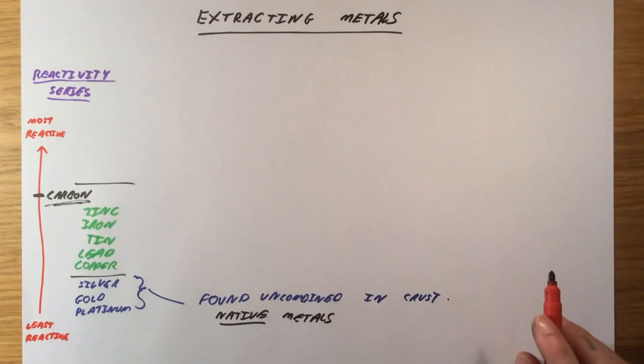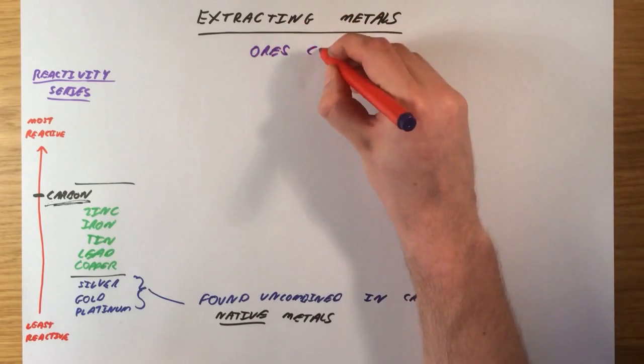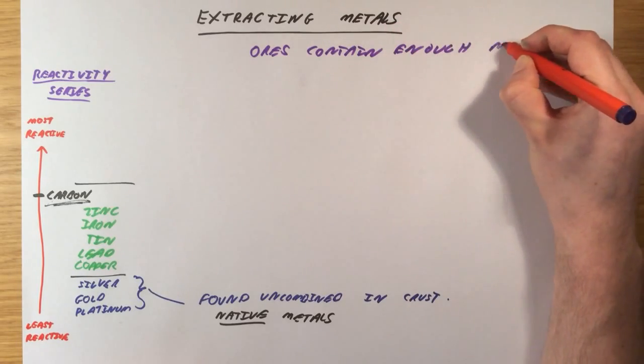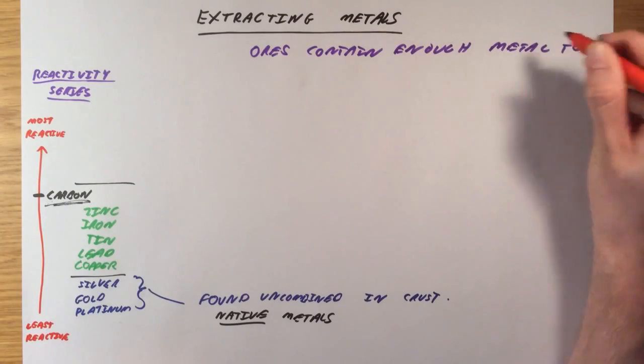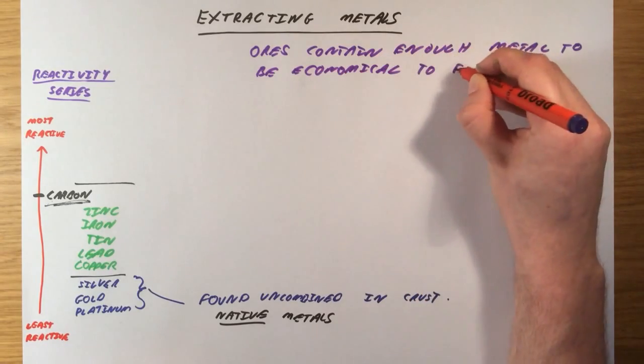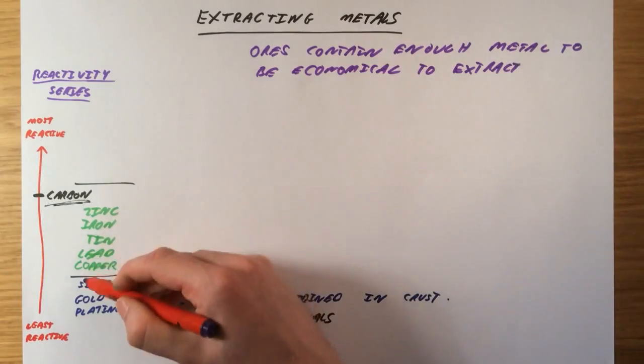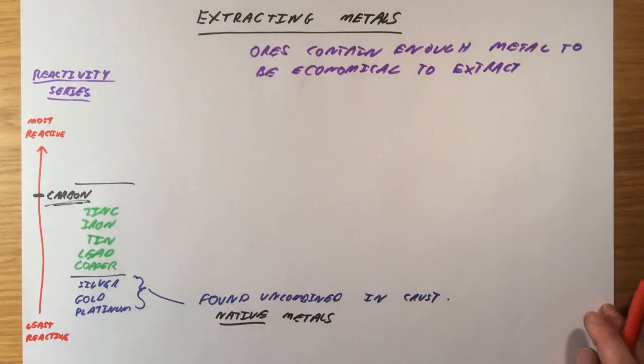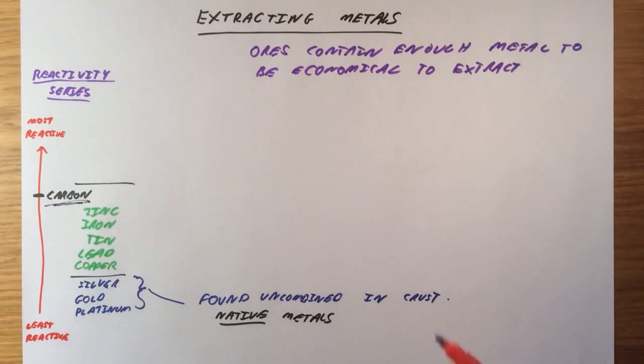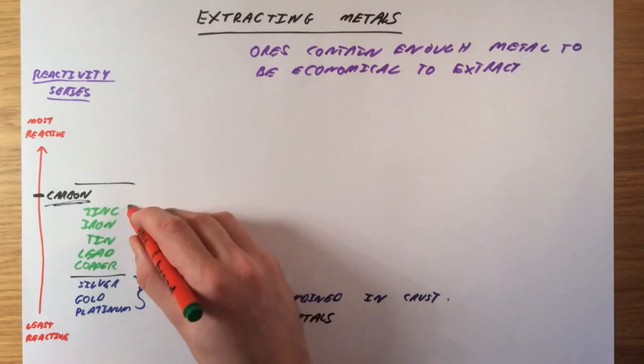Now, ores are rocks which contain enough of a metal compound to make it economical or worthwhile to extract. So ores contain enough metal to be economical. Because these metals here and the ones above them are more reactive, they will react with substances like oxygen, water, and they will form things like metal oxides, metal carbonates, which we need to actually get the metal out of. And how we actually do this for these metals is by reacting them with carbon.